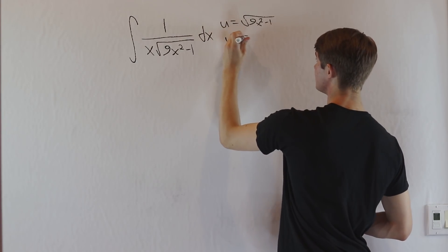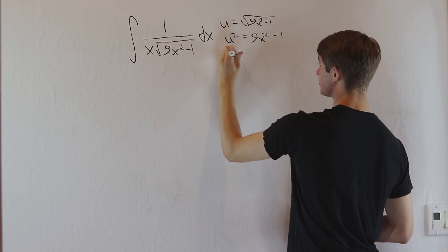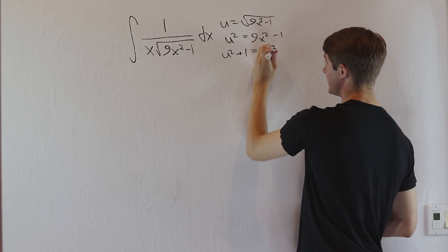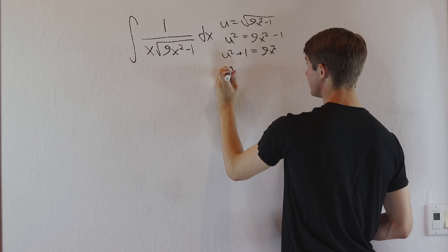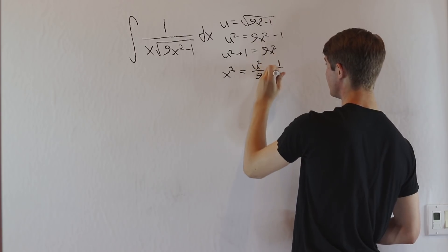So if we square both sides, we get that u squared equals 9x squared minus 1. Add 1 to both sides, u squared plus 1 equals 9x squared, and finally we can divide by 9. So we get that x squared equals u squared over 9 plus 1 over 9.